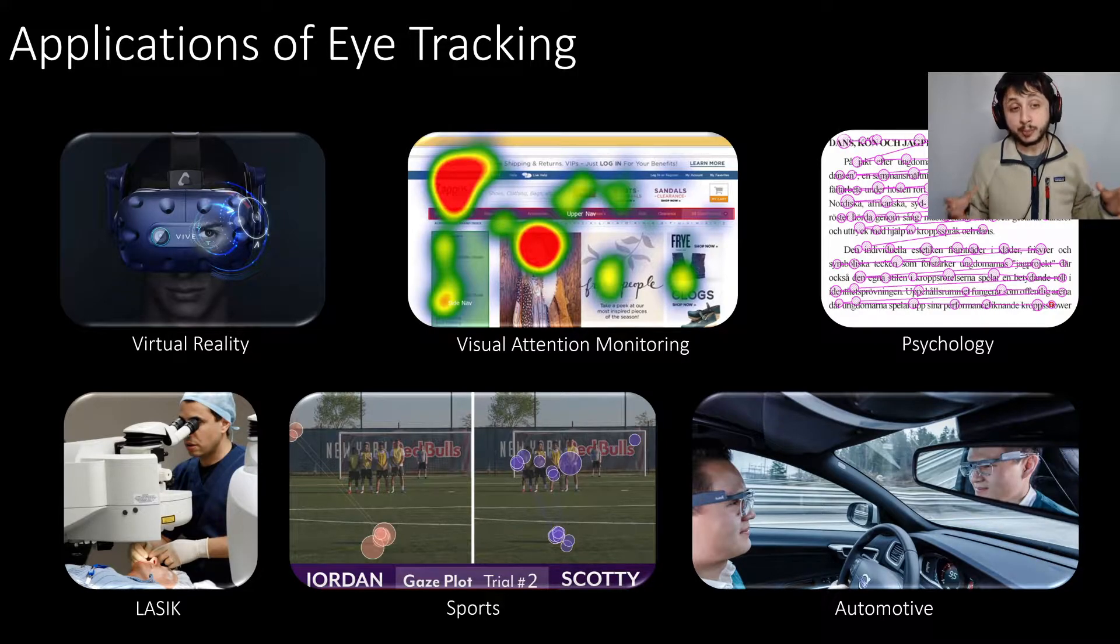Eye tracking turns out to be a really important enabling technology in a lot of fields. For example, virtual reality and augmented reality, where it can be used for things like foveated rendering or predictive rendering, or in surgery, where you might be doing something like LASIK and you don't want to burn the user's eye, so you turn the laser off when the eye moves.